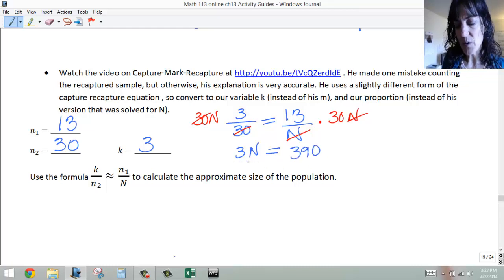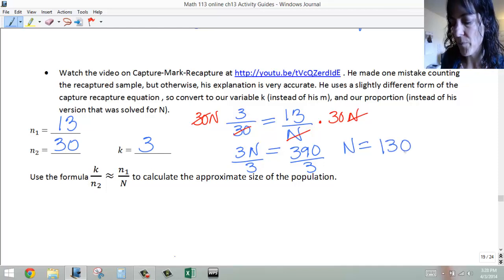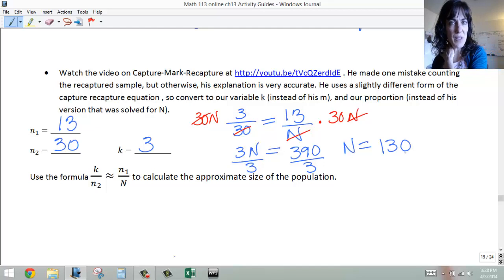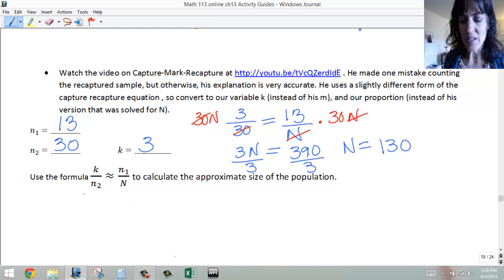We want the n by itself, so divide by that 3, and we get n equals 130. So we believe that there are 130 snails in the garden.